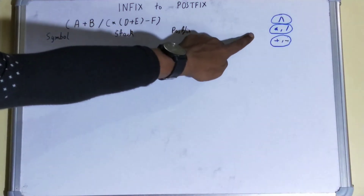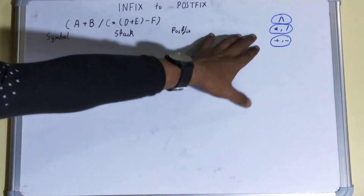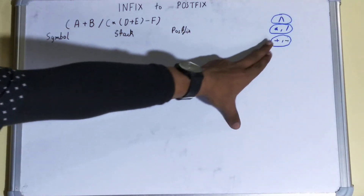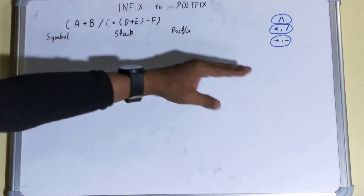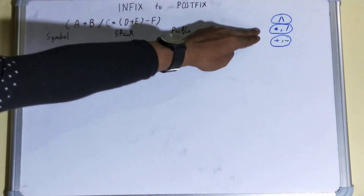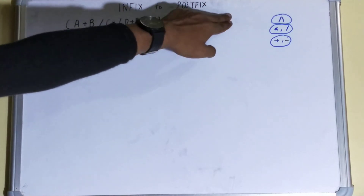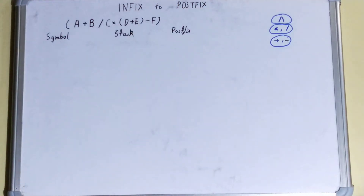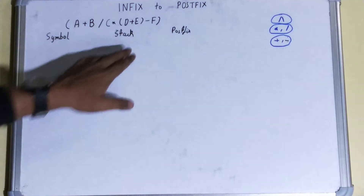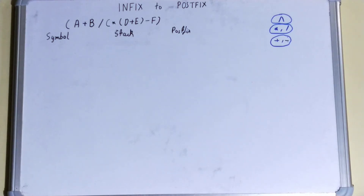First is the operator precedence table. Plus and minus have the same priority. Asterisk and division have the same priority. Power has the highest priority. There are certain rules: if a higher priority operator is already in your stack and a lower priority operator comes in, the higher priority operator will be popped out before stacking in the lower priority operator.